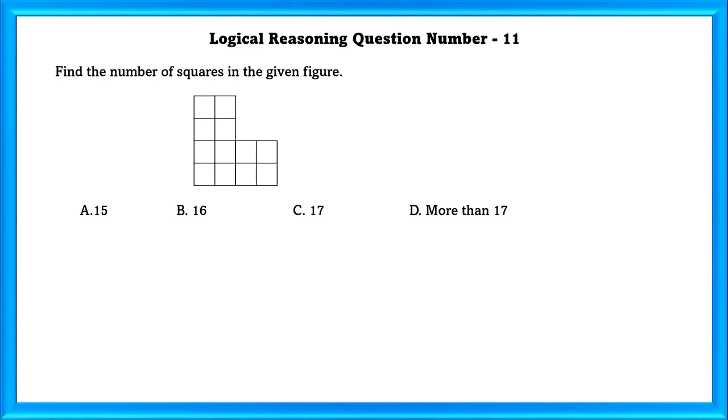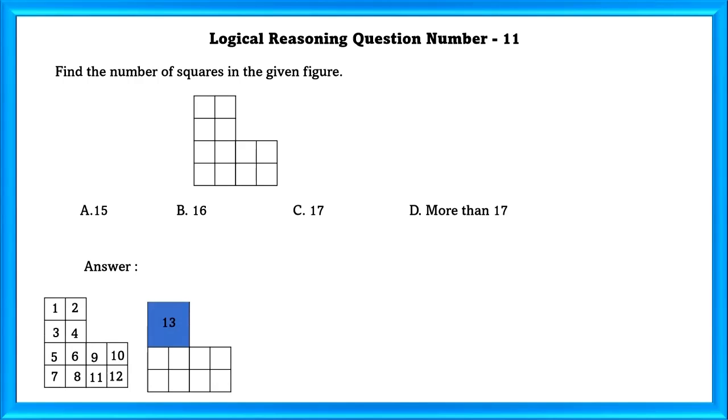Logical Reasoning Question Number 11. Find the number of squares in the given figure. If we count every square, we get 12 squares. And then 1, 2, 3, 4 form 13. And then 5, 6, 7, 8 form 14.